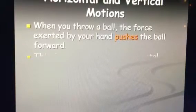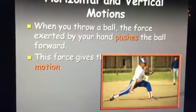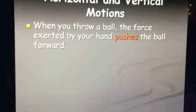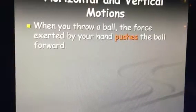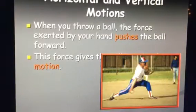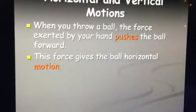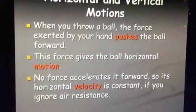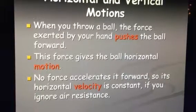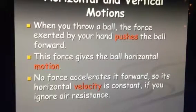We have horizontal and vertical motions when we talk about this push or pull on an object being thrown. When you throw the ball, the force exerted by your hand pushes the ball forward, and gravity creates a vertical motion pulling it down to the earth. No force accelerates it forward, so its horizontal velocity is constant — if you ignore air resistance. Obviously air resistance is still there, but we can ignore it for some problems.